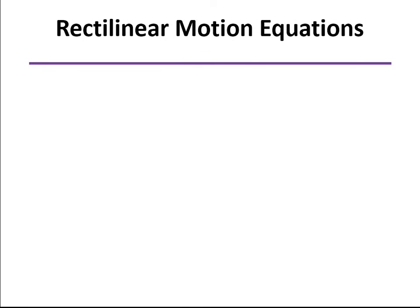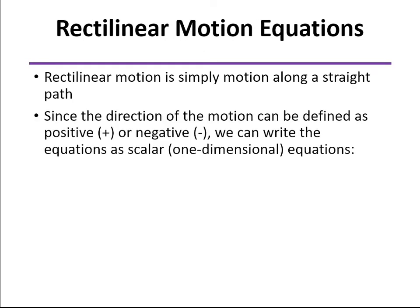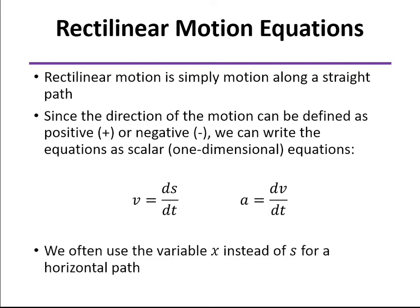Now, we're going to be looking at motion simply along a straight path. And so we really don't have to carry through the vector notation here as long as we remember that positive will be usually to the right and negative to the left if we're talking about a horizontal scale. So we write these one-dimensional equations as scalar. Velocity being ds/dt and acceleration being dv/dt.